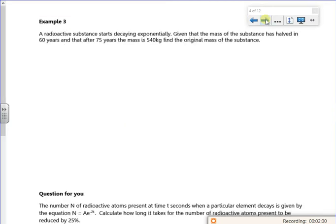Next! Example 3, which is really example 4. A radioactive substance starts decaying exponentially. Given that the mass of the substance has halved in 60 years, and that after 75 years its mass is 540, find the original mass.